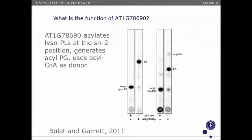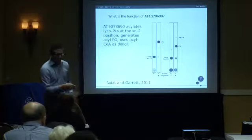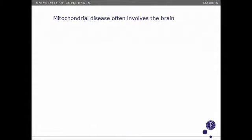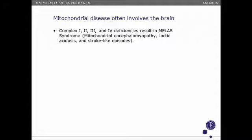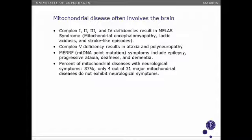So that got us thinking. We were aware of the homology with tafazin and had already pulled the trigger on lipidomics, so we started reading about Barth syndrome. One thing that intrigued us — I was in the neurology department at the University of Iowa — is that mitochondrial disease often involves the brain. Complex I, II, and III deficiencies result in mitochondrial encephalopathy, lactic acidosis, and stroke-like episodes. ATP synthase defects are associated with ataxia and neuropathy. Point mutations in the mitochondrial genome are associated with neurocognitive phenotypes as well. In total, about 87% of major mitochondrial diseases involve neurological symptoms on some level.